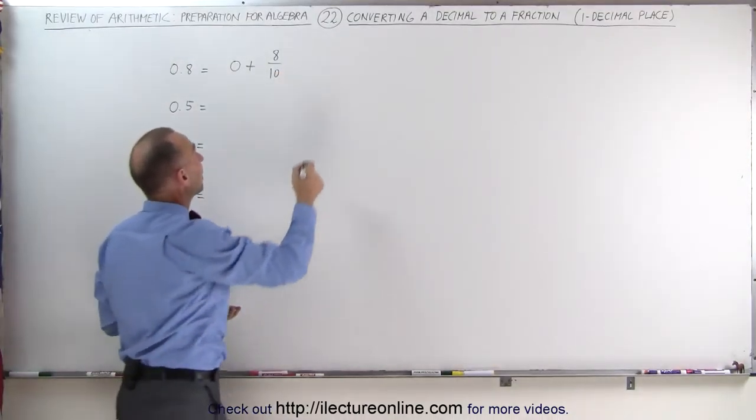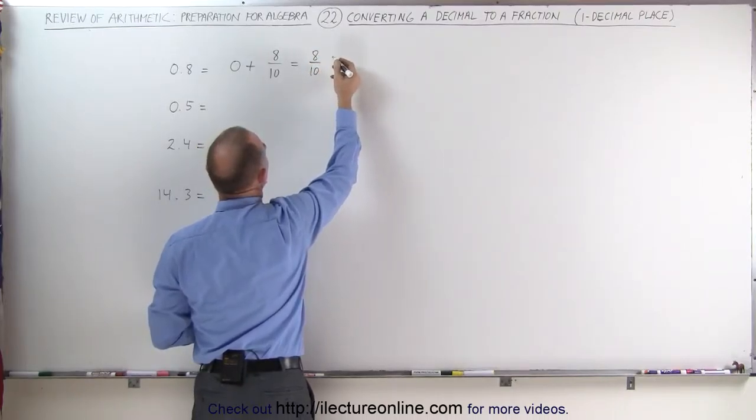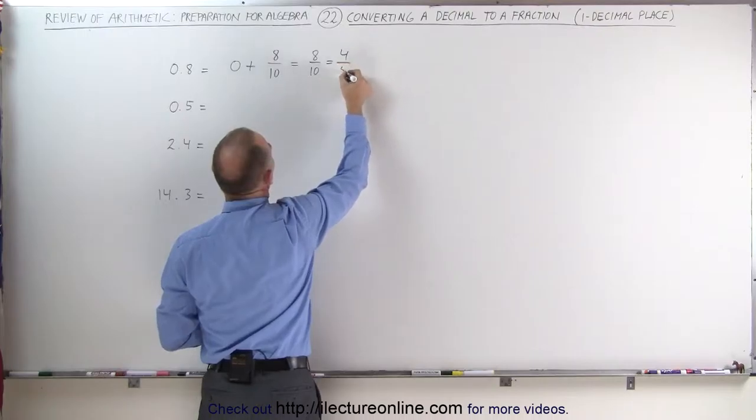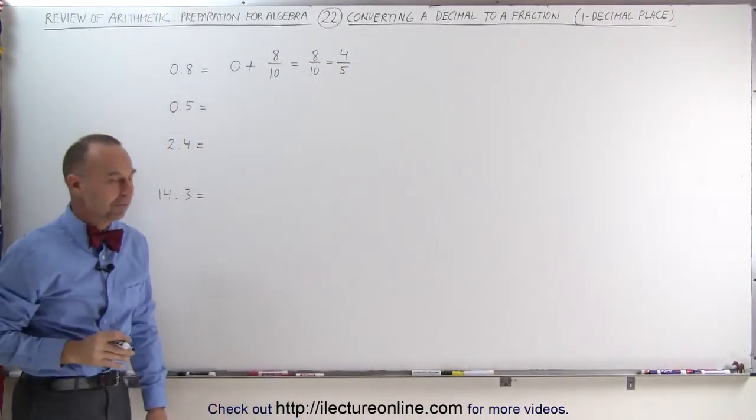Since we add 0 to that, this is simply 8 divided by 10 and that can be simplified. 8 divided by 2 is 4, 10 divided by 2 is 5. So when we divide both the numerator and the denominator by 2, we get 4 fifths.